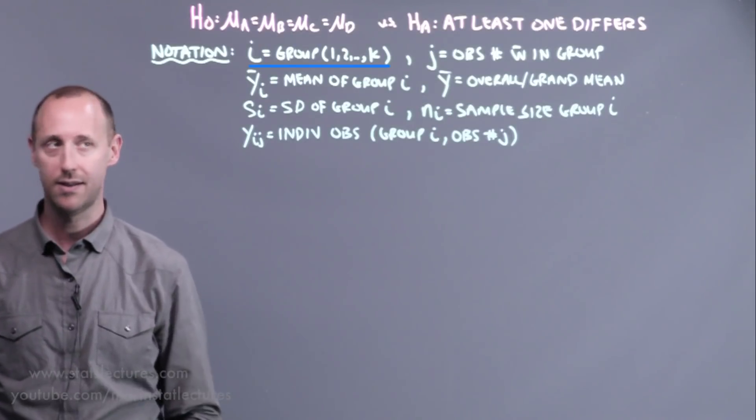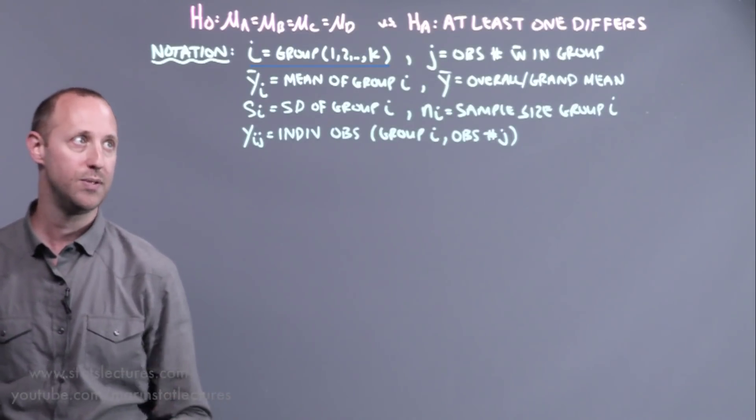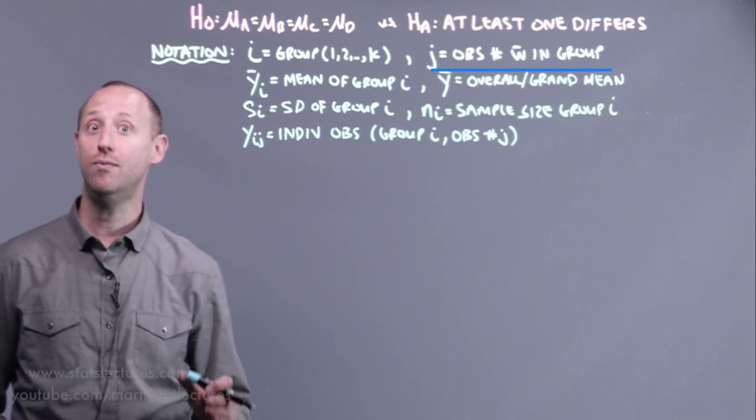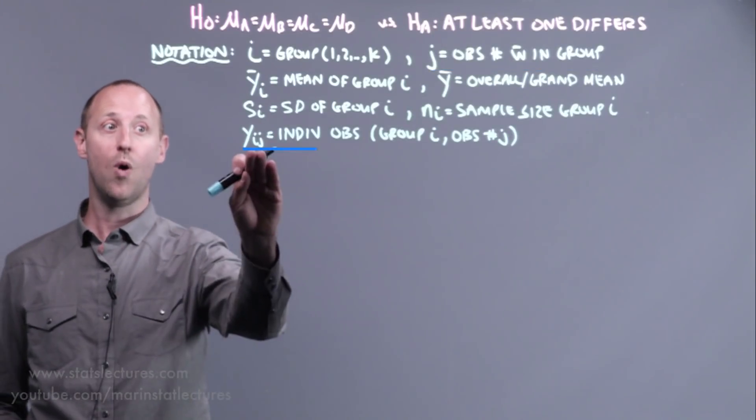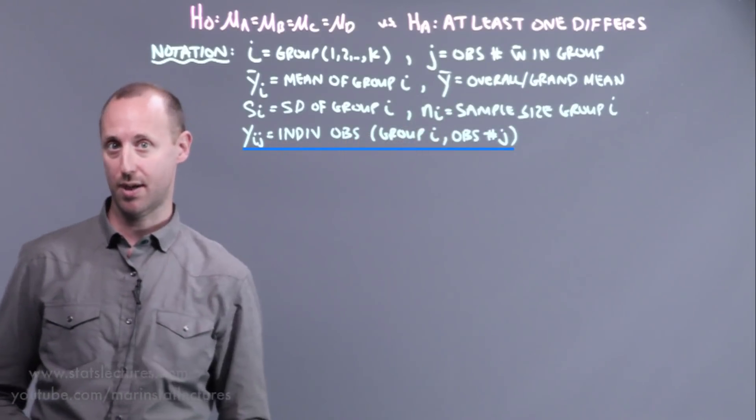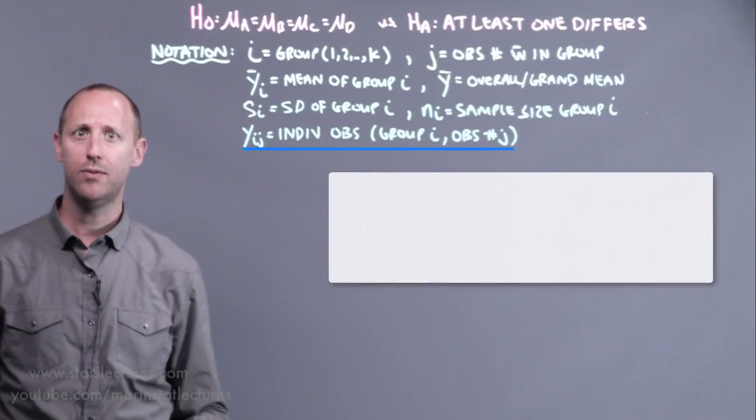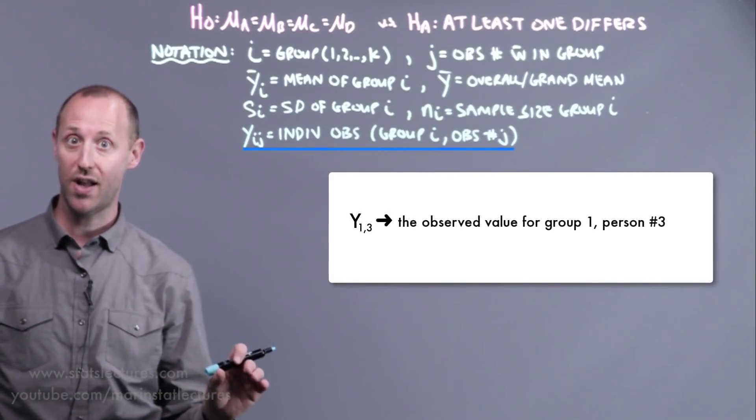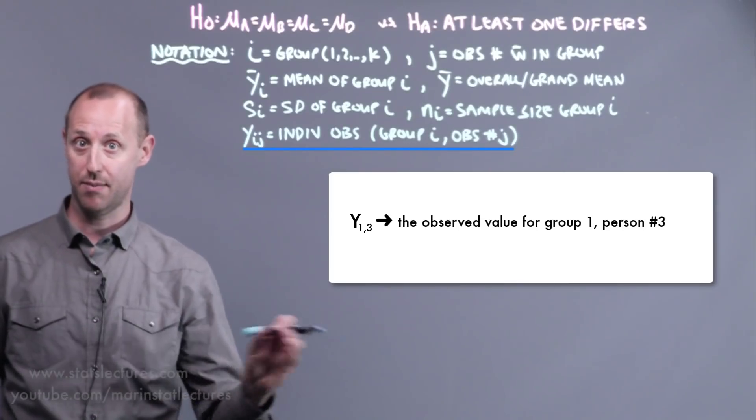K signifies the number of groups. J is used to represent the observation number within a group. Yij tells us the individual observations in group I, observation number J. So for example, Y1,3 is the observed value for group one, person number three.